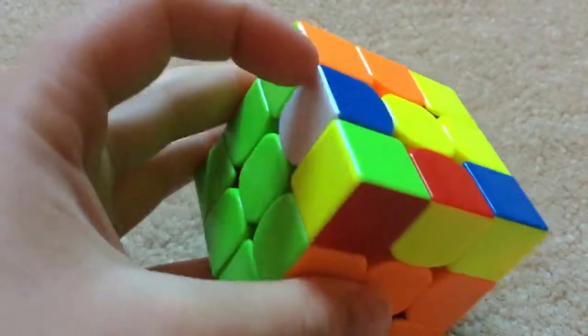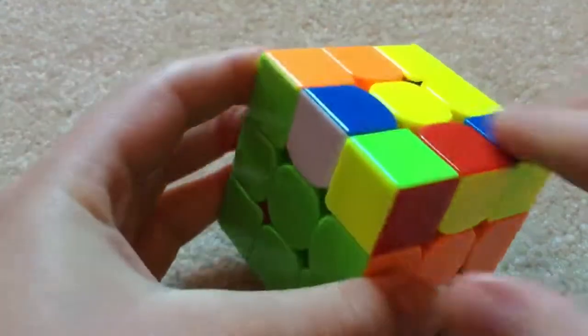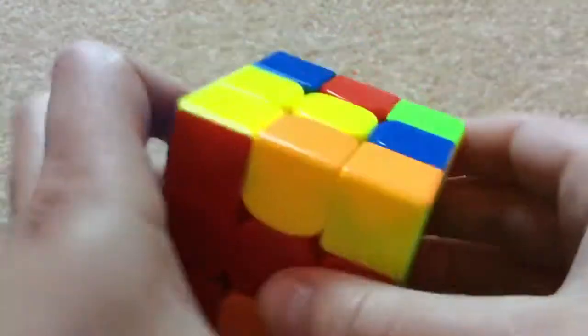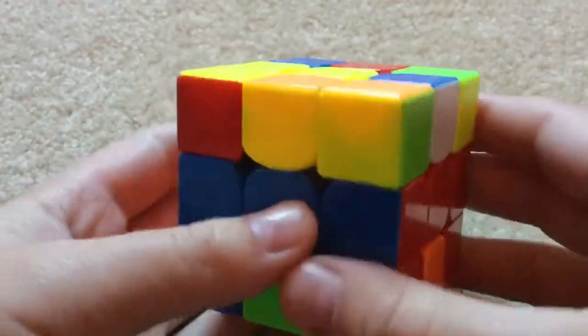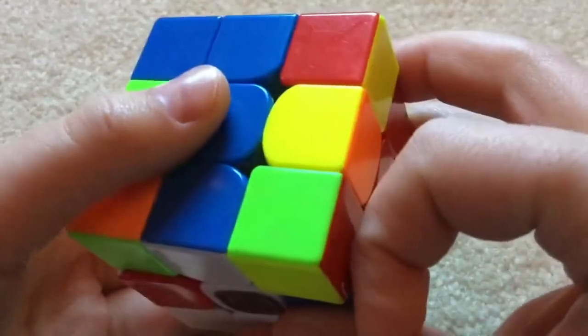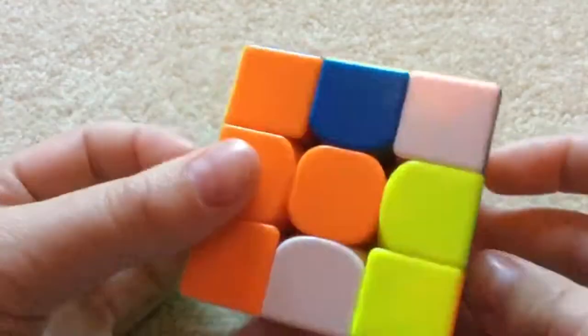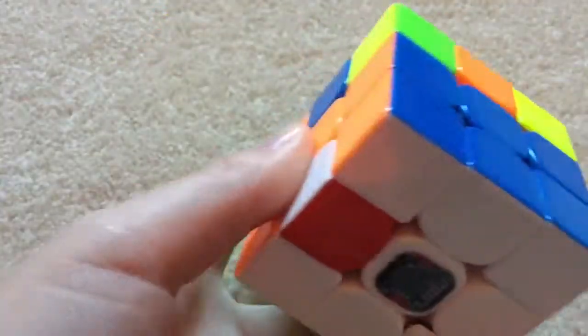Now we see this blue edge right here. And we can't do the same thing because it's flipped the other way. So what we have to do is bring it over right here. And so that's on the right, and do an R' F R, then rotate, and insert this F2L pair back in. And that will put the edge in.